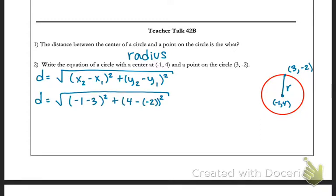What I did is I went ahead and plugged in my information. I started with the negative 1 for my x's and subtracted the 3 and have that squared. Then I would have the 4 minus the negative 2 squared.